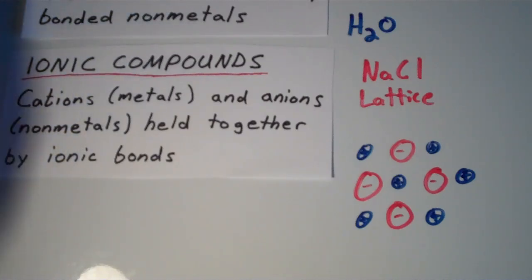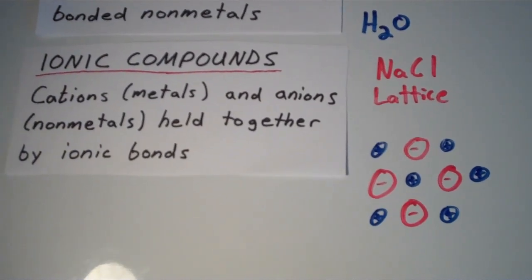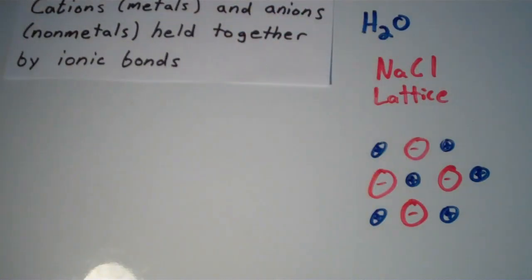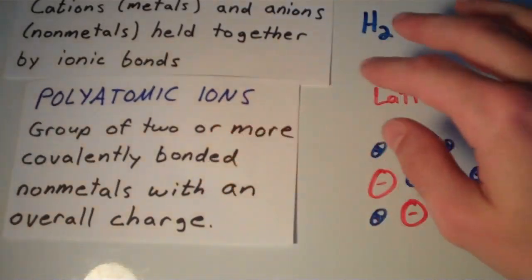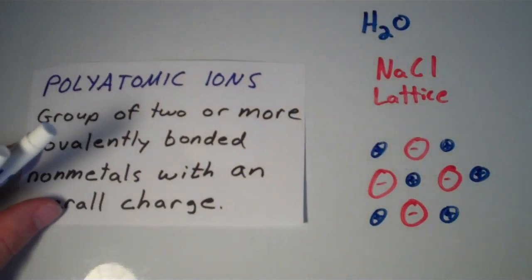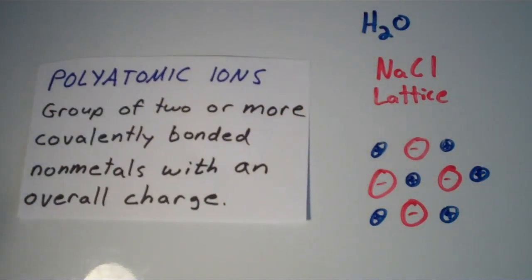So that's basically the difference between ionic compounds and molecular compounds. One more thing about ionic compounds is that you can have what are called polyatomic ions. And a polyatomic ion is simply a group of two or more covalently bonded nonmetals that has an overall charge.